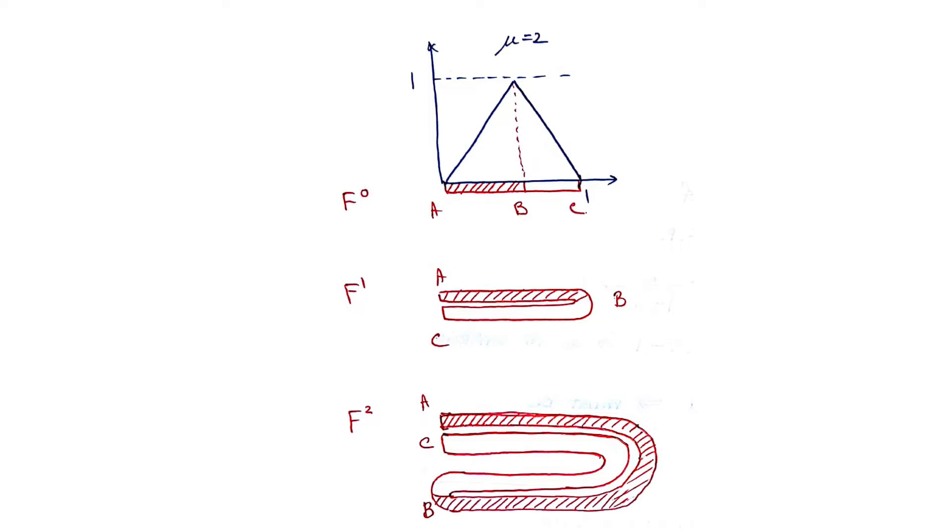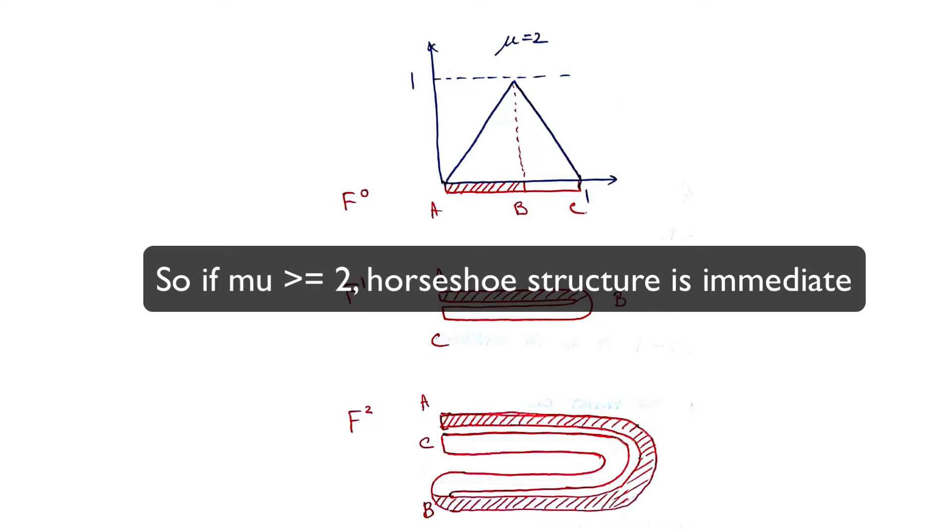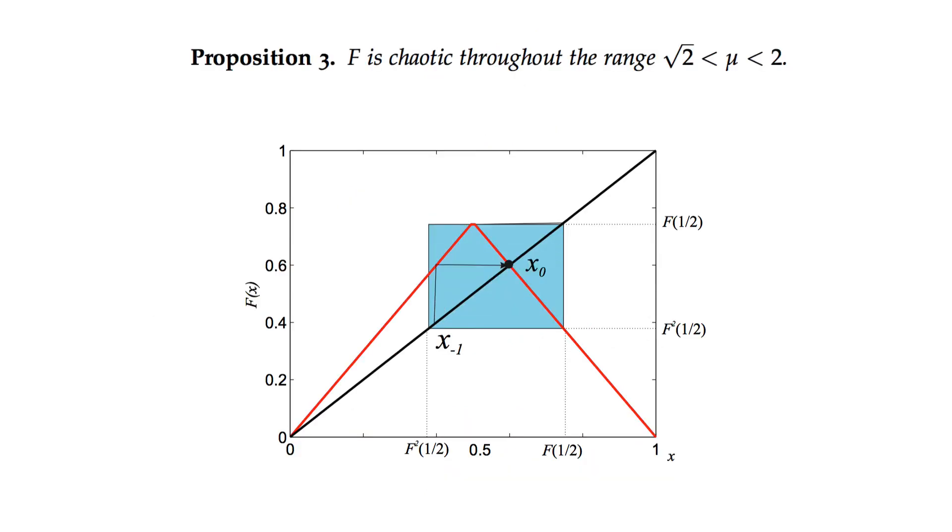This is extended to the case that mu is greater than 2. When mu is greater than or equal to 2, it's easy to see and show that the tent map is chaotic. Now, the question that we're confronted with is whether the map is chaotic for mu less than 2.